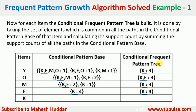The conditional frequent pattern tree is found by identifying common elements in the conditional pattern bases. For Y, K is common across all paths, giving K with frequency 1+1+1=3. For O, K and E are common, giving K, E with frequency 3. For M, only K is common, with frequency 2+1=3. For E, K is the only element with frequency 4. For K, there is no conditional pattern tree.